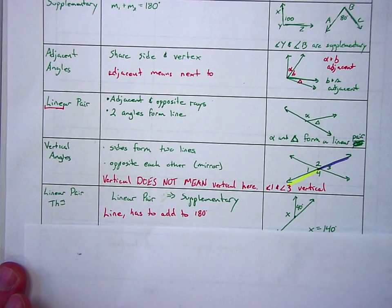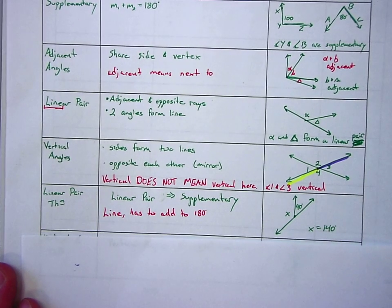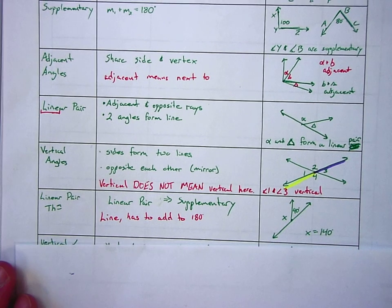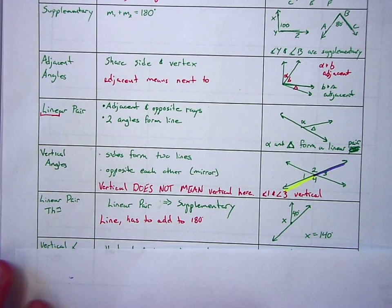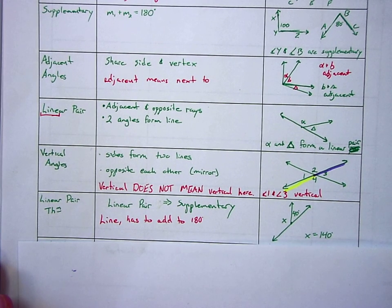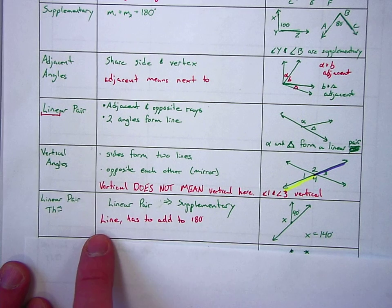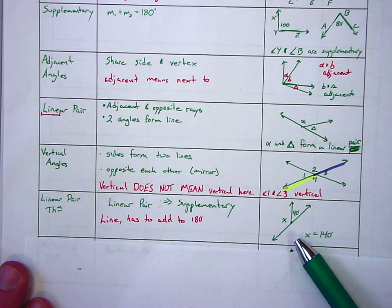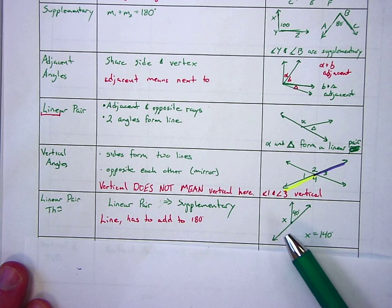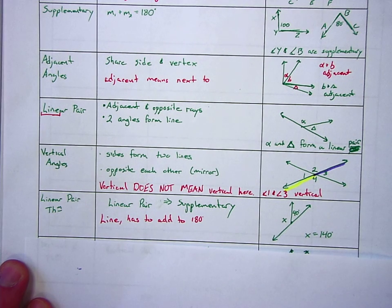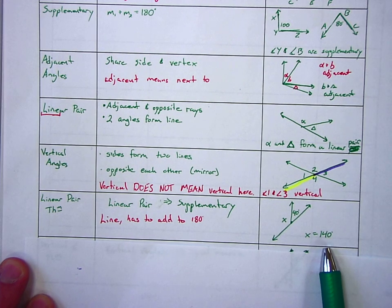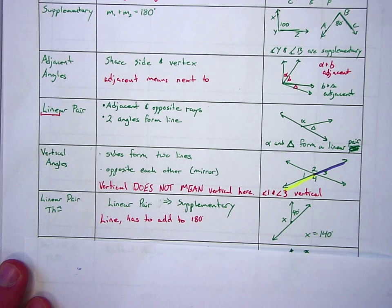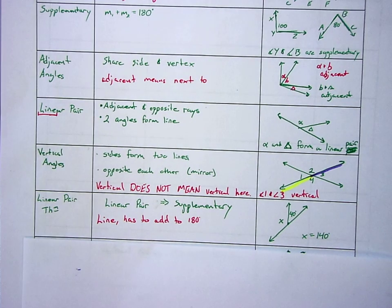Next, we're going to deal with the linear pair theorem, which should be kind of obvious because what do we have in a linear pair? We have a line. So we know that linear pairs are automatically supplementary. We're going to know that they add to 180. So if I have this picture in the memory clue with X and 40 degrees, we know that X has to be 140 degrees because 180 minus 40 is 140.